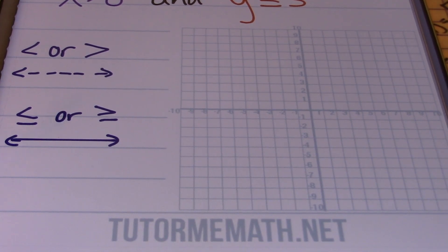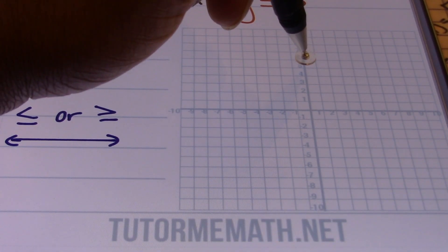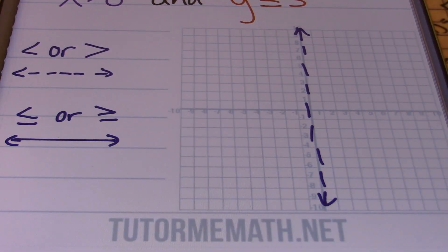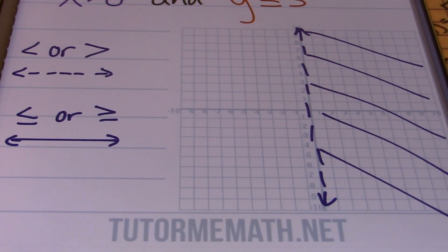When you have a less than or equal to or a greater than or equal to symbol, then you can use a solid line as you would with an equation. Now I'll show you the graph of x is greater than zero — it will be a dashed line going through the y-axis. The format of x equals a number is a vertical line. I'm going to have my vertical line going right down the middle, with arrows on both ends. Because this is an inequality, I'll need to shade where my solutions can be found — solutions greater than zero.